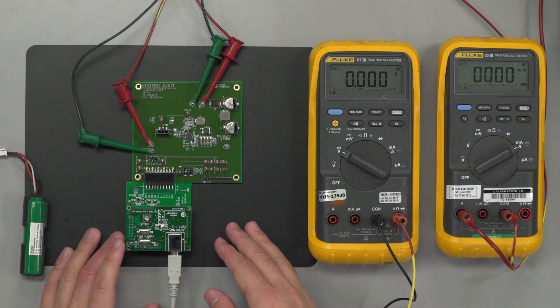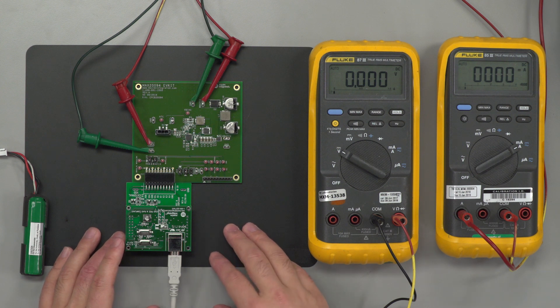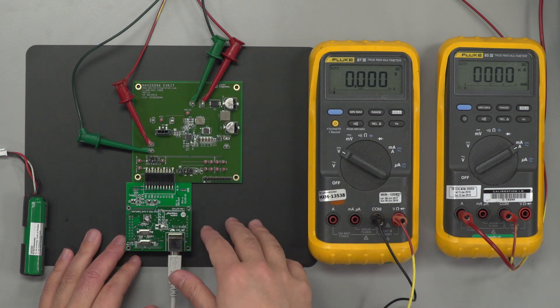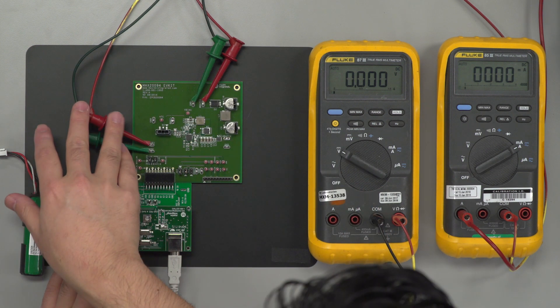So here we have the EV kit, it's already been hooked up to the power supply. We have a 14 volt rail coming into this MBAT-1 pin. We have a 4 volt rail, low voltage rail coming in to the SUP-1 pin here.